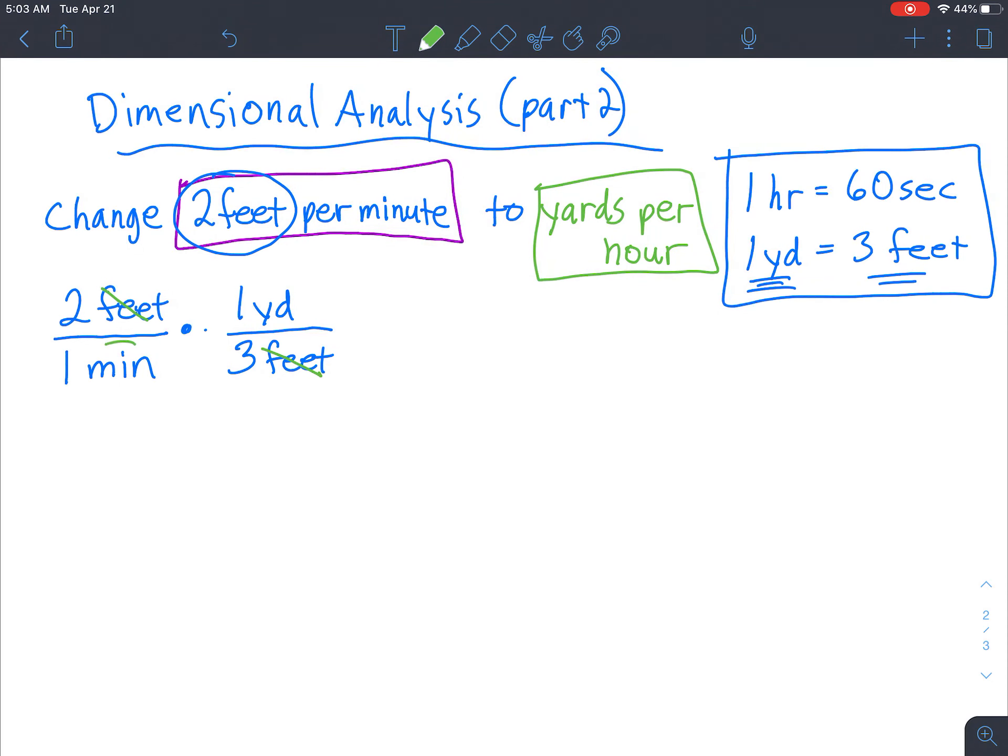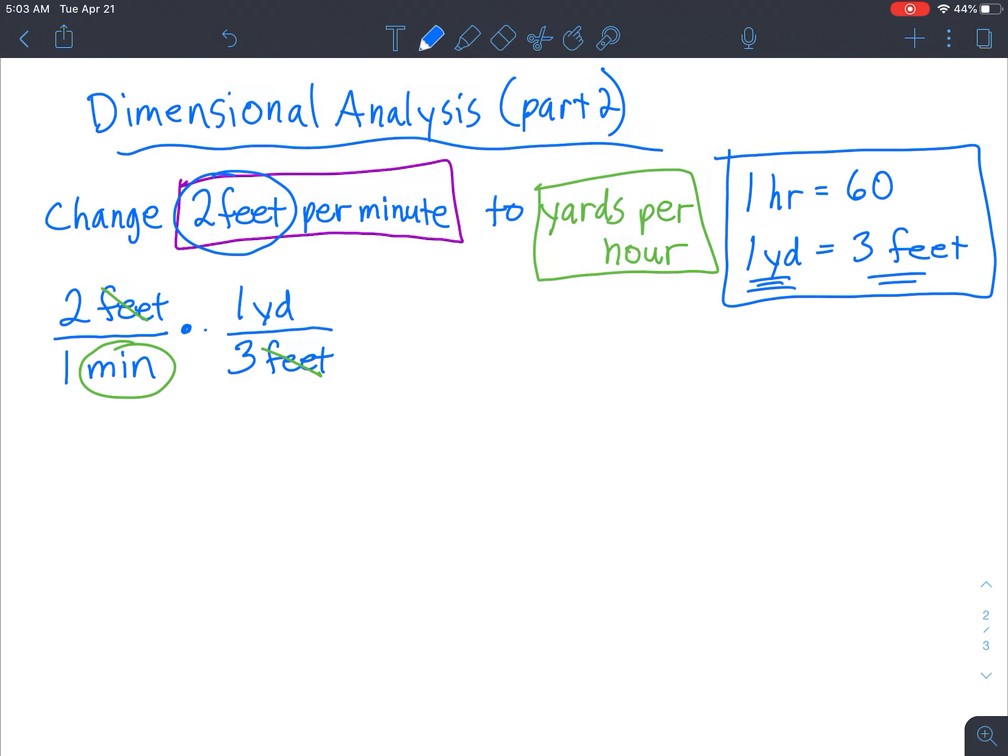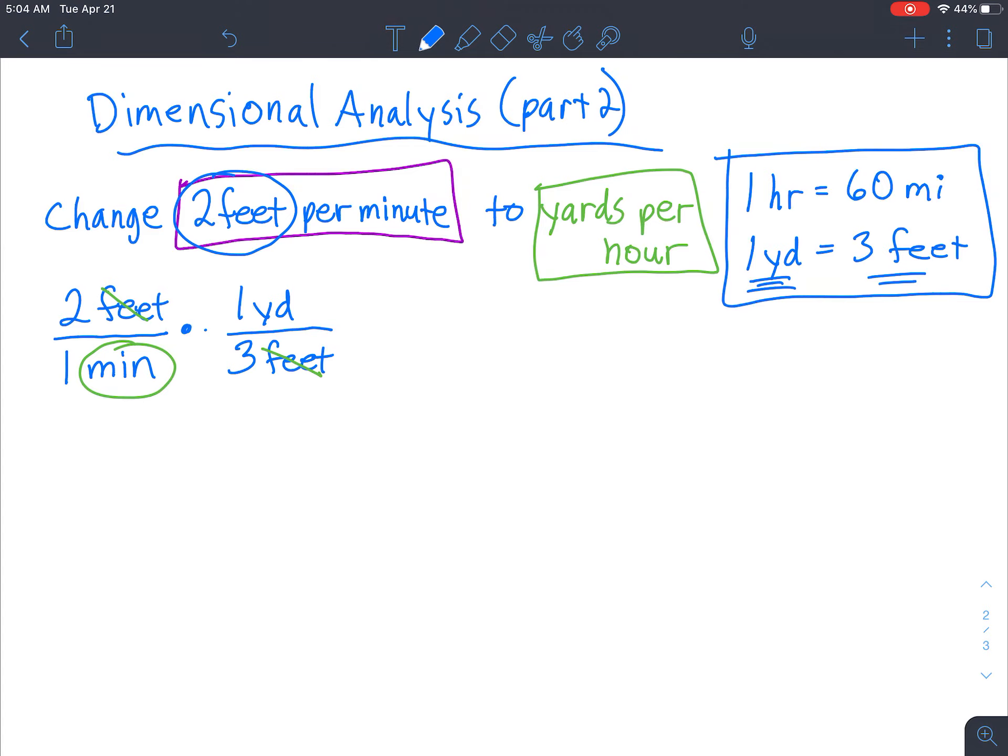So we end up with yards. However, we still want to change this minute. And we want to change it to... Oh, I just realized I put one hour equals 60 seconds. Now, that is not true. So one hour equals 60 minutes. So if you accidentally copied my error, go ahead and fix it now.